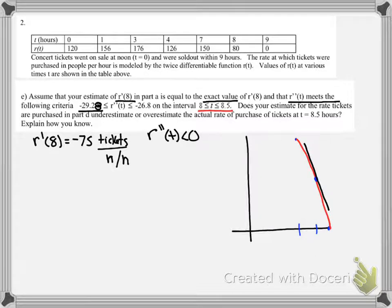Does your estimate of the rate tickets are purchased in Part D, where we found 42.5 tickets per hour from our equation of a tangent line, using that to approximate the curve, we want to know is that an underestimate or an overestimate of the actual rate of purchase?